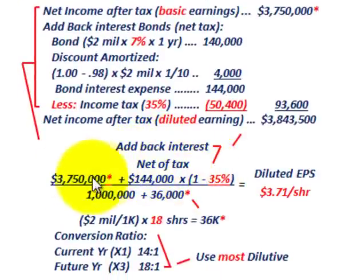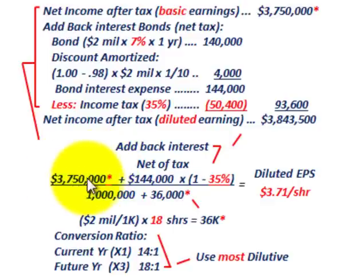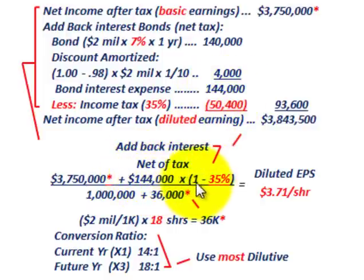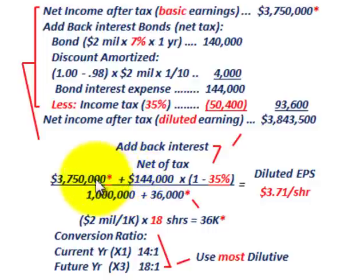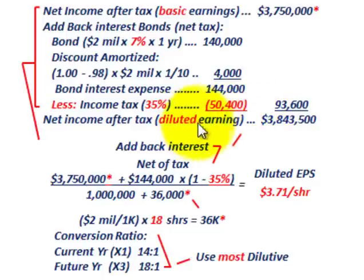As a shortcut, the general formula is: take net income of $3,750,000, then add back the total interest of $144,000 multiplied by (1 minus the tax rate). With a 35% tax rate, that's $144,000 × 65%. The result in the numerator — basic earnings plus the after-tax interest add-back — equates to our diluted earnings numerator of $3,843,600.